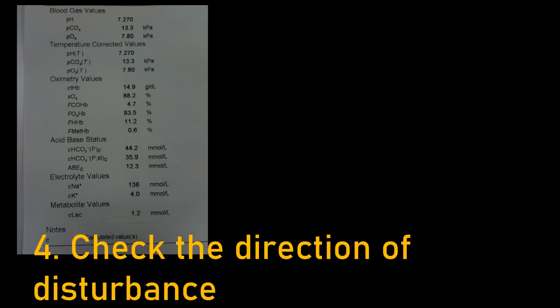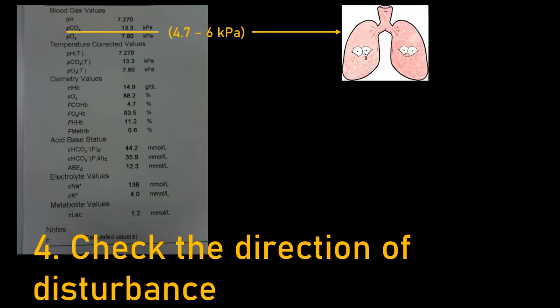Check the direction of disturbance. First, look at the partial pressure of carbon dioxide. Lungs regulate carbon dioxide through expulsion of CO2 during ventilation. CO2 is acidic as it forms carbonic acid in the body. In primary respiratory disorders, the pH moves in opposite directions to CO2. This patient has a respiratory acidosis.